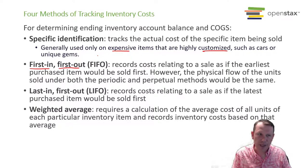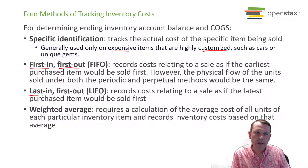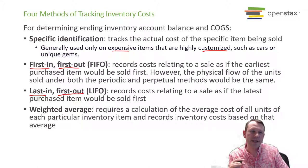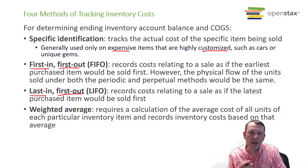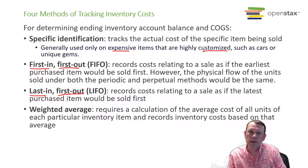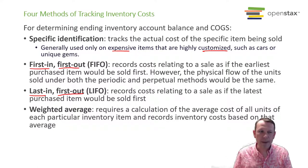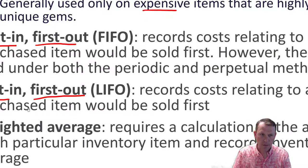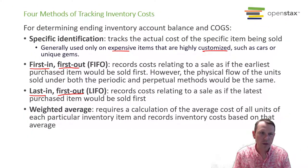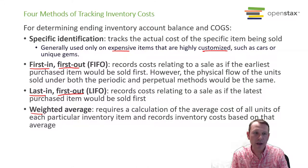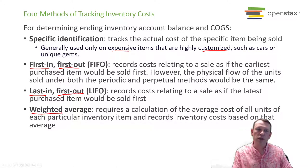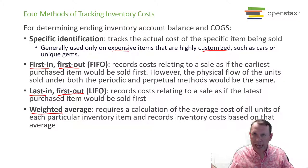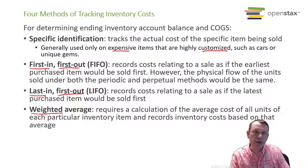Last in, first out — LIFO — is the opposite: we're selling our newest items first, so the oldest ones stay in inventory. And then the weighted average: it's not about which one comes first or last — we average them all out, selling at an average cost with some calculations involved. So there are our four methods.